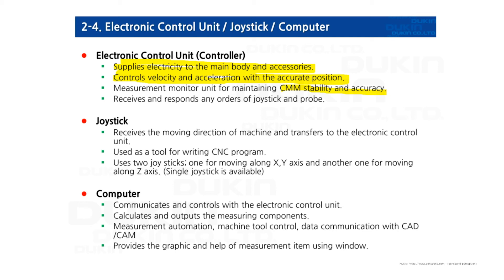If you press the touch disabled reset button when the CMM is normal, it cuts off the signal through the probe sensor. And if you press the button when an error message is on, it will clear the message if the issue is already solved. The computer is an essential device of CMM because it operates the software and communicates with the electric control unit, and also calculates the output measuring components, among many other things.